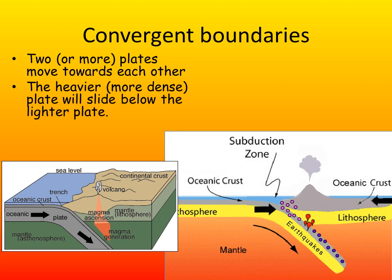As the plate slides underneath, its movement is never smooth. This will cause shaking and vibration of the earth, and we'll see earthquakes. Other earthquakes are caused at subduction zones by movement of magma. The melting plate causes a build-up of magma in the earth's mantle, which then starts to make its way to the surface through the crust. This movement of magma will also cause earthquakes.